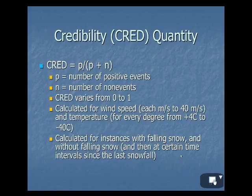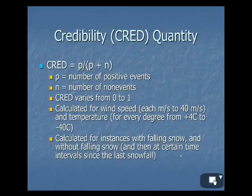From here, a credibility quantity was defined — you can see the formula — and it gives a number between zero and one. For similar environmental conditions, if you come up with zero, under those conditions you will not have any blowing snow reducing visibility. If you come up with one, every time you have those conditions you will receive blowing snow. Anything in the middle — say 0.5 — means 50% of the time, given those environmental conditions, you will get blowing snow down to that given threshold.